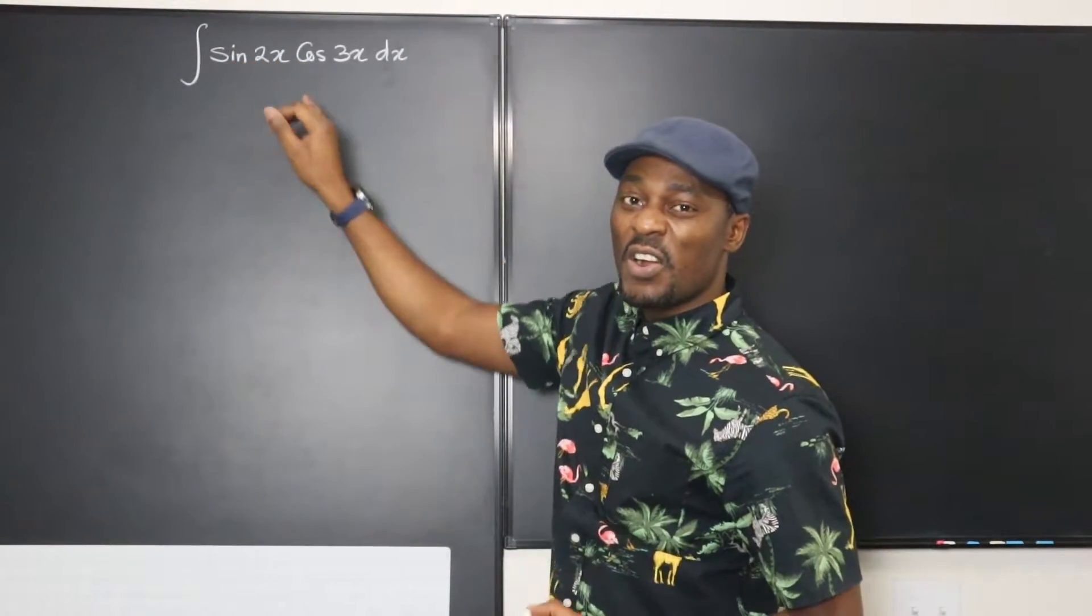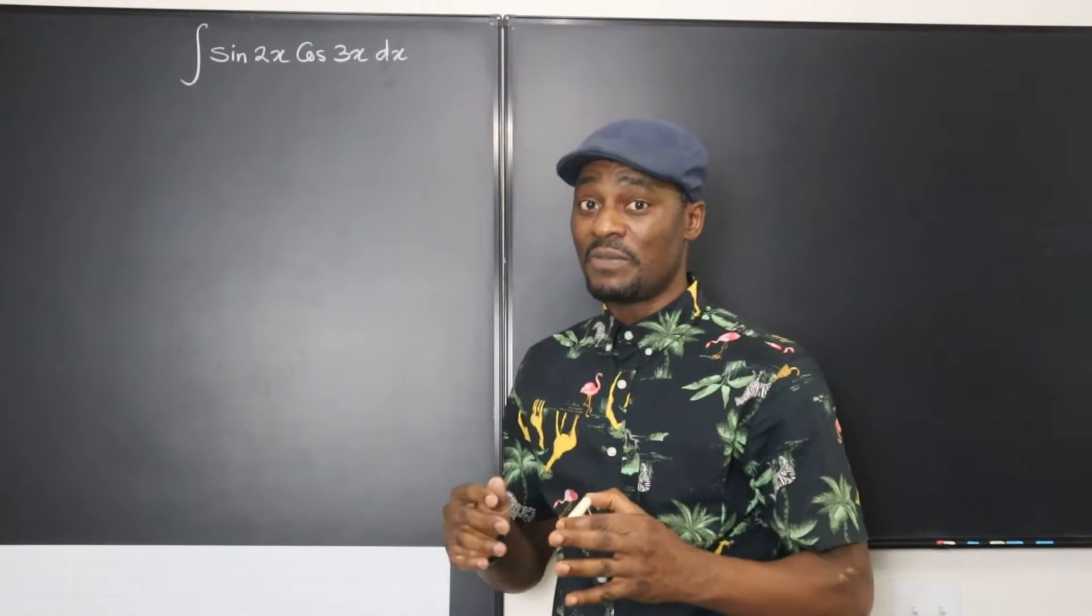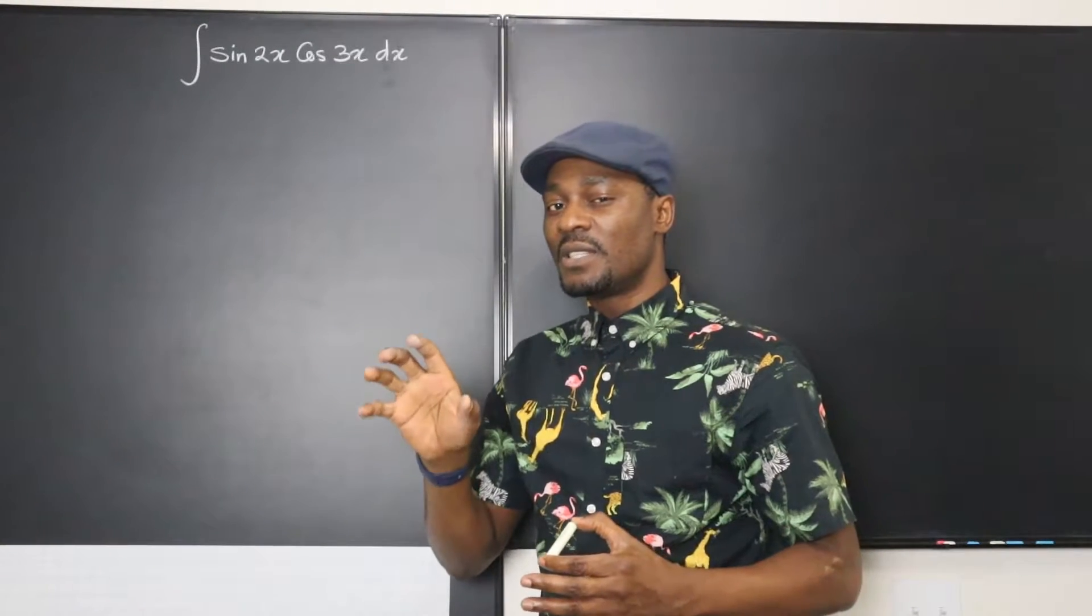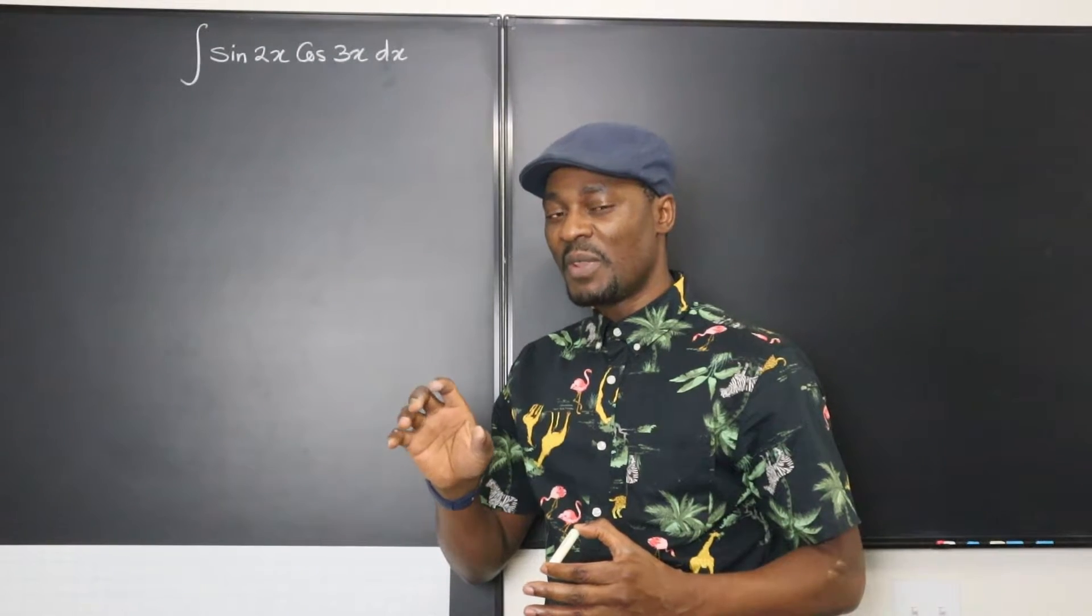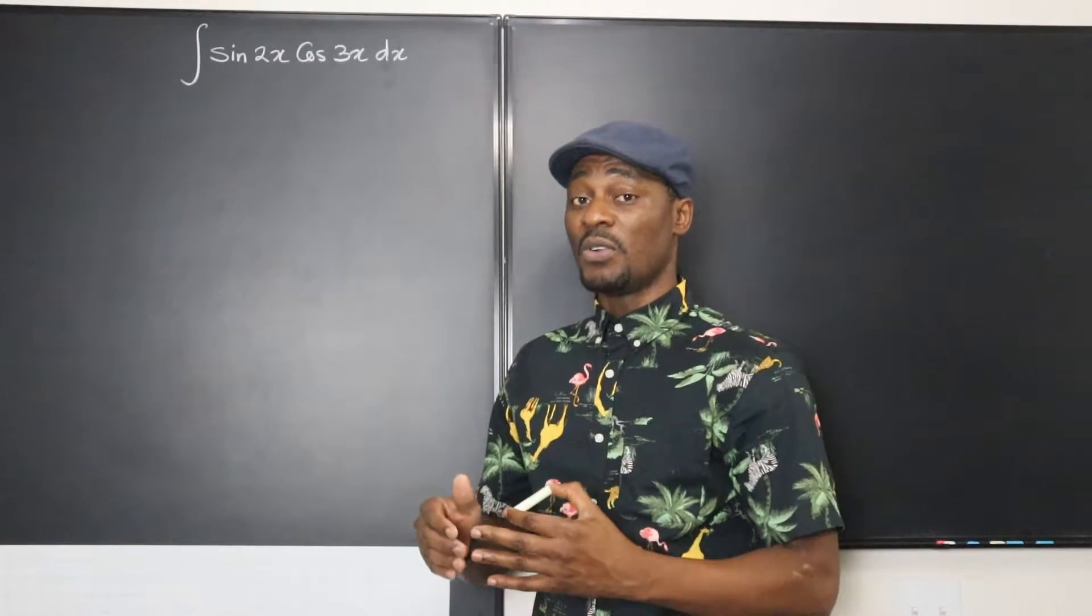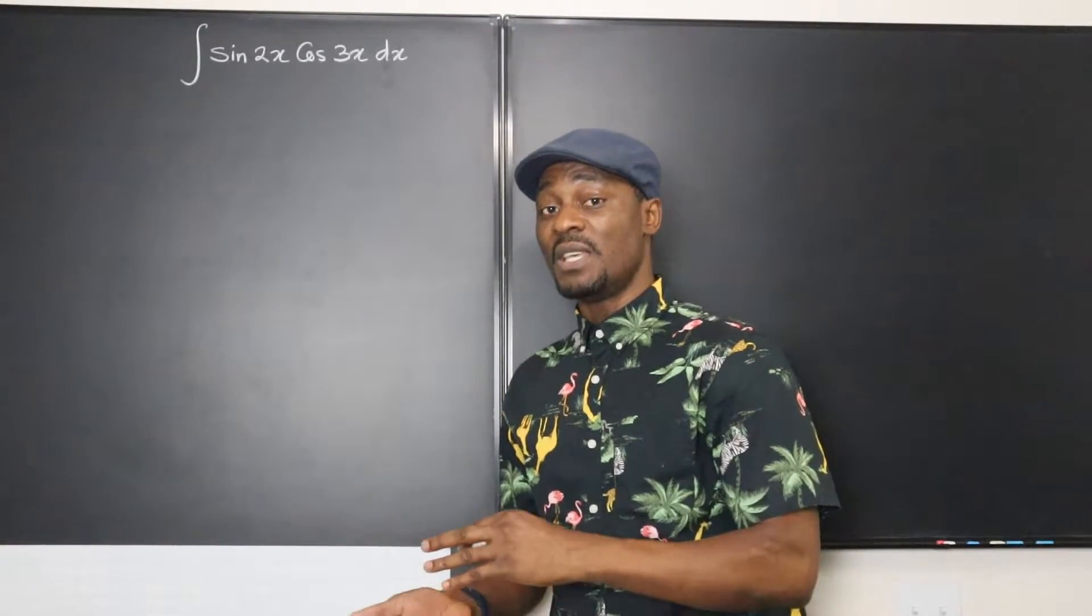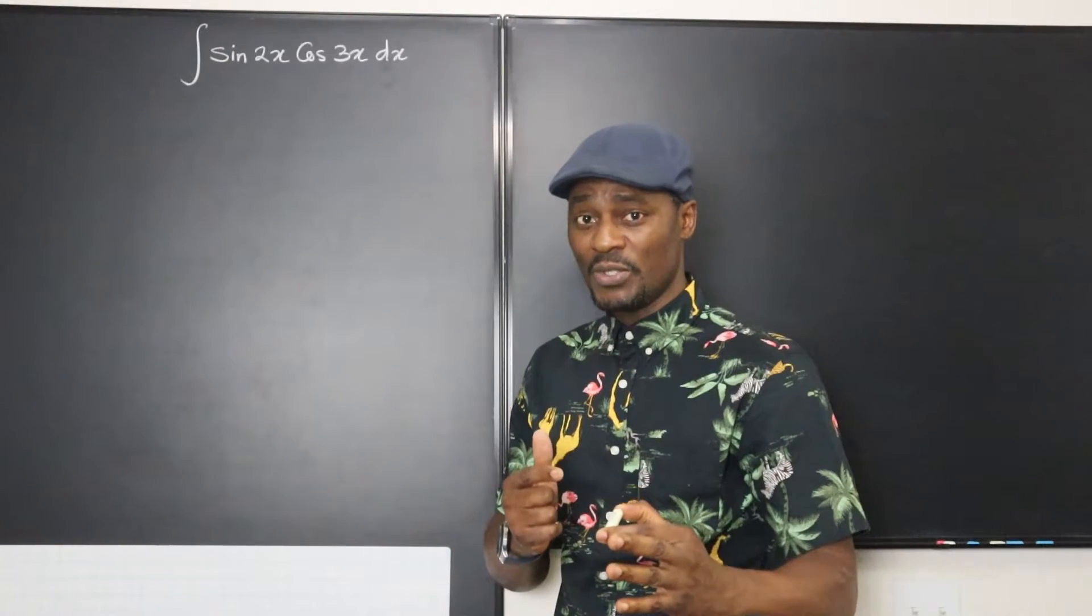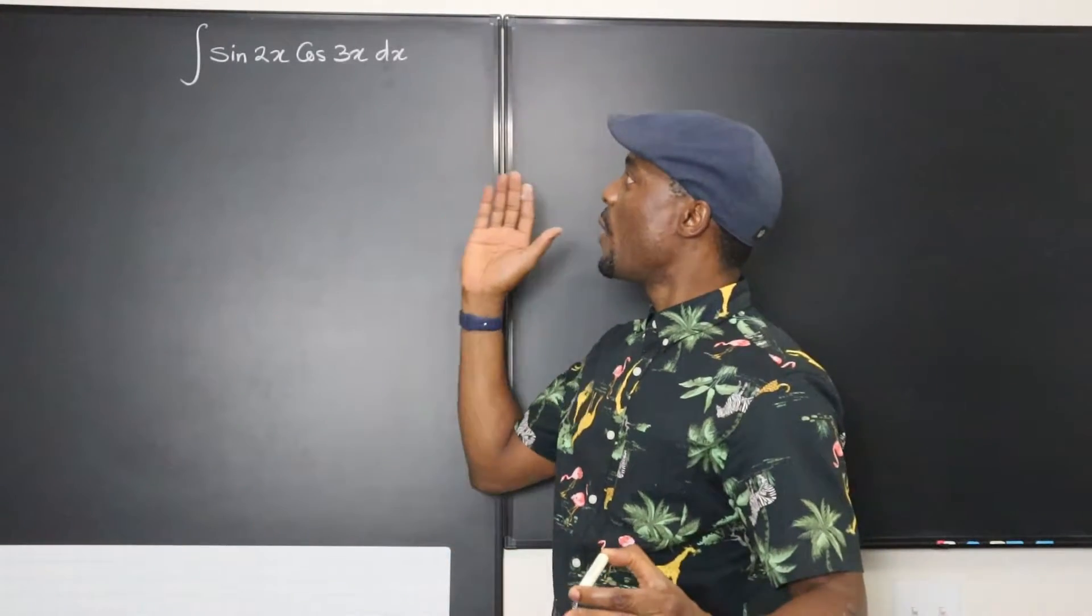whenever sine and cosine are sitting next to each other with two different arguments, think of the sine of a sum of angles. Remember the angle sum trig identity: sine(a + b) equals sine a cosine b plus cosine a sine b. And that's what we're going to try to use today and see how quickly it could help us solve this.